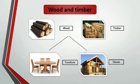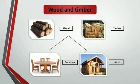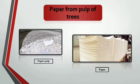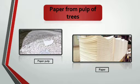Children, we get wood and timber from trees. With this we make different types of furnitures and houses. We get paper from pulp of trees through different processes.